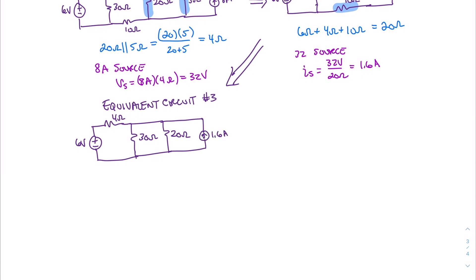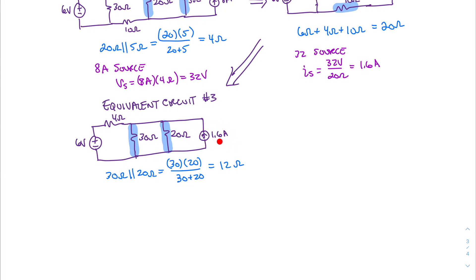Once again, we can combine two parallel resistances: the 30-ohm resistor and the 20-ohm resistor. The 30-ohm resistor in parallel with the 20-ohm resistor equals 30 times 20 divided by 30 plus 20, which equals 12 ohms.